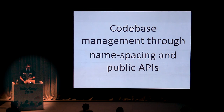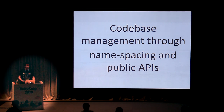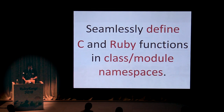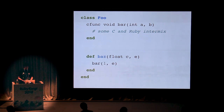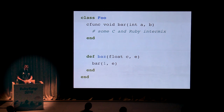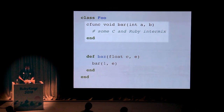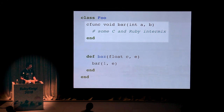One of the big hurdles of writing C extensions is that it's really hard to manage the codebase — there are no namespaces in C the way we have in C++ or in Ruby. Rubex will allow you to seamlessly define C and Ruby functions using the class and module terminology of Ruby. In this code sample, you can see two functions, bar and baz, inside a class called Foo. Bar has been defined using the cfunc keyword, which tells Rubex that this is a C function and not a Ruby method. We call it void to tell Rubex that this C function returns a value of type void — basically returns nothing — and it accepts an argument of type integer and a Ruby object called b.